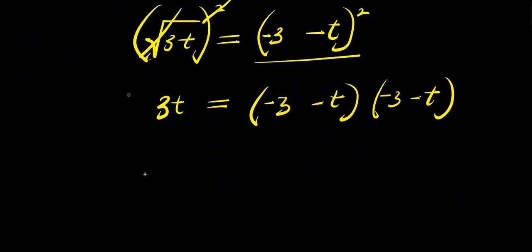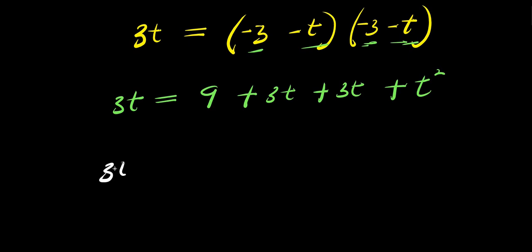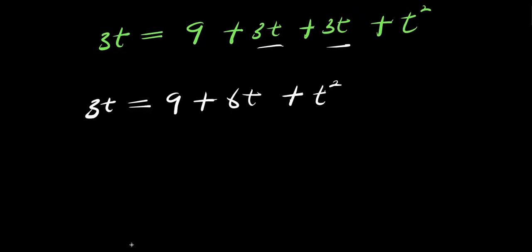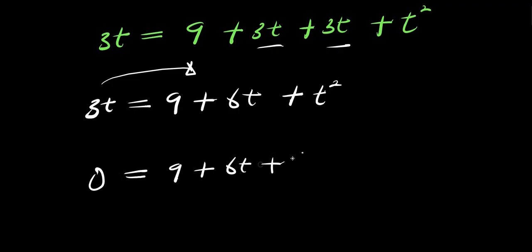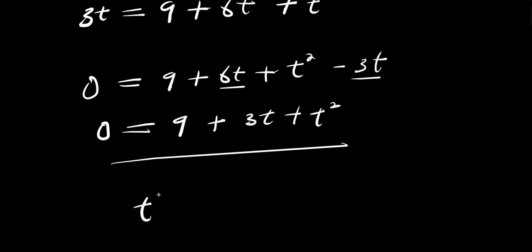So from here we have 3t equals 9 plus 6t plus t squared. Moving 3t over, we get 0 equals 9 plus 6t minus 3t plus t squared, which simplifies to 0 equals 9 plus 3t plus t squared. Rearranging, we have t squared plus 3t plus 9 equals 0. This is the quadratic equation we need to solve, and we can solve it using the quadratic formula.